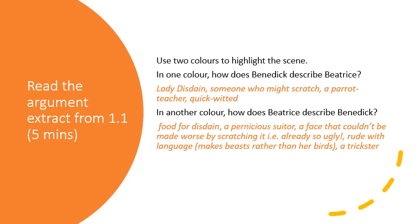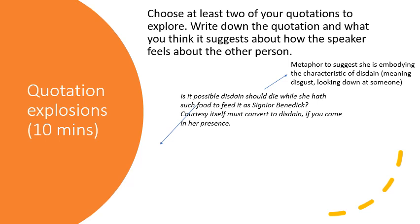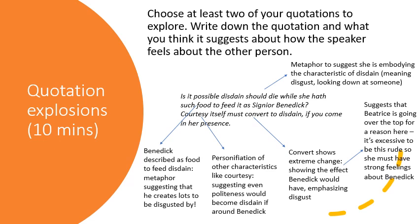Now I want you to use two colors to highlight the scene: in one color, how does Benedict describe Beatrice, and in another color, how does Beatrice describe Benedict. I've got some notes for you there. I'll give you five minutes to do that, then on to the next slide. Then choose two of your quotations to explore — write down the quotation and what you think it suggests about how the speaker feels about the other person: one quotation for Benedict describing Beatrice, one for Beatrice describing Benedict, and explore it in the way I've done with the example quote. Ten minutes for that.